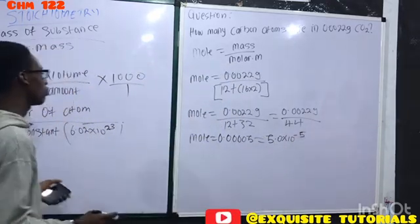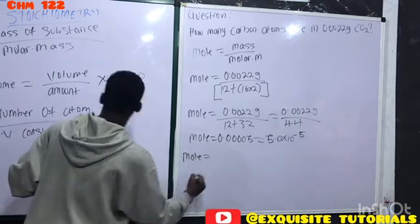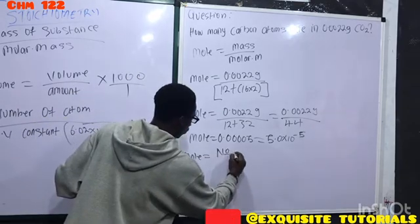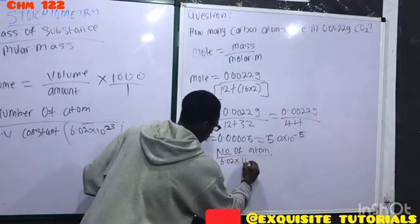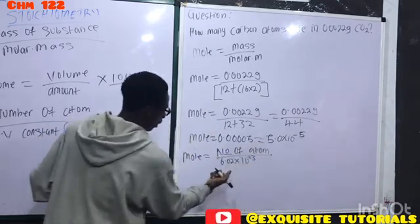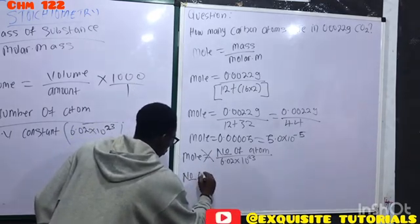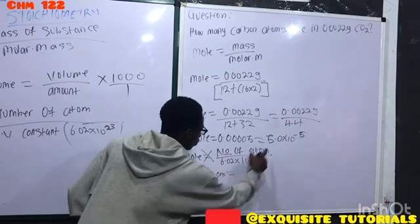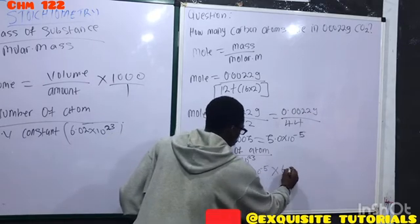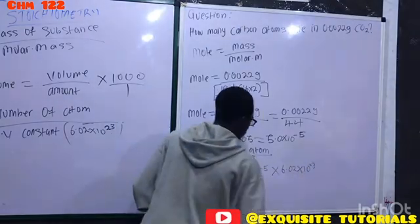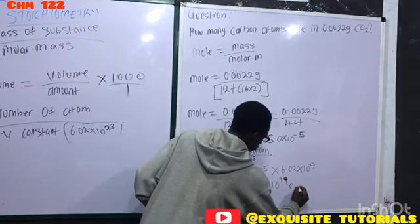Now we find atoms: mole equals number of atoms over Avogadro's constant. We already have the mole. Number of atoms equals 5.0 × 10⁻⁵ times 6.02 × 10²³, which is 3.01 × 10¹⁹ atoms.